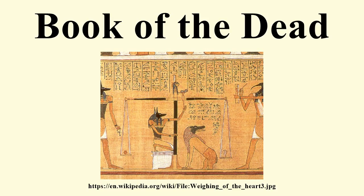During the XIX Dynasty in particular, the vignettes tended to be lavish, sometimes at the expense of the surrounding text. In the Third Intermediate Period, the Book of the Dead started to appear in hieratic script as well as in the traditional hieroglyphics. At the same time, many burials used additional funerary texts, for instance the Amduat. During the 25th and 26th Dynasties, the Book of the Dead was updated, revised and standardized. Spells were consistently ordered and numbered for the first time. This standardized version is known today as the Saite Recension.